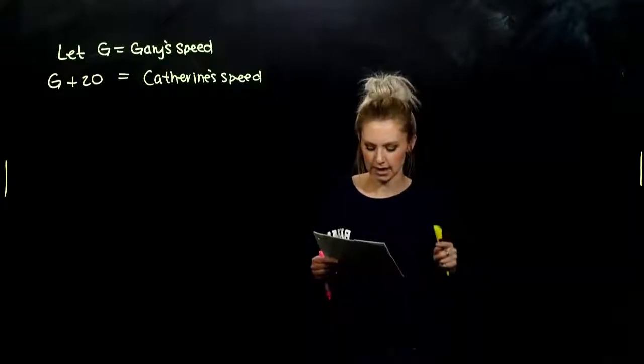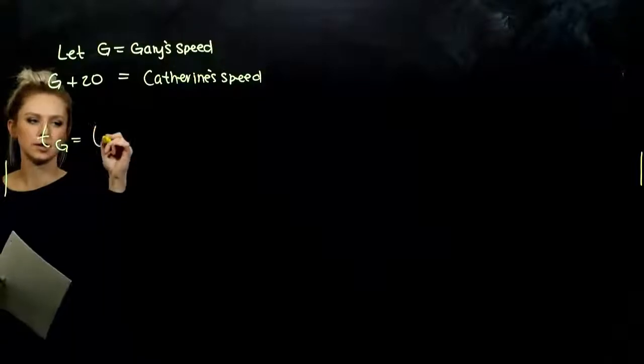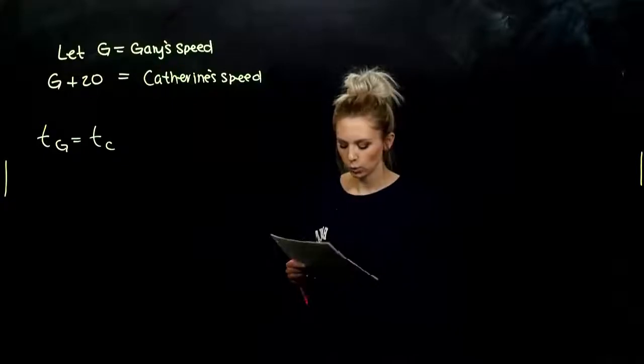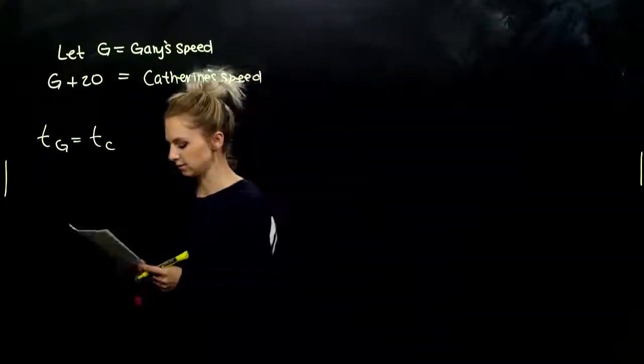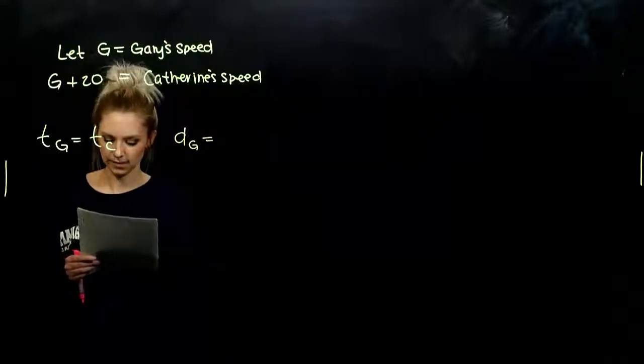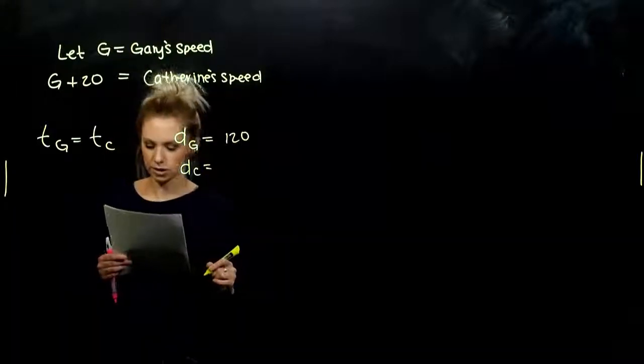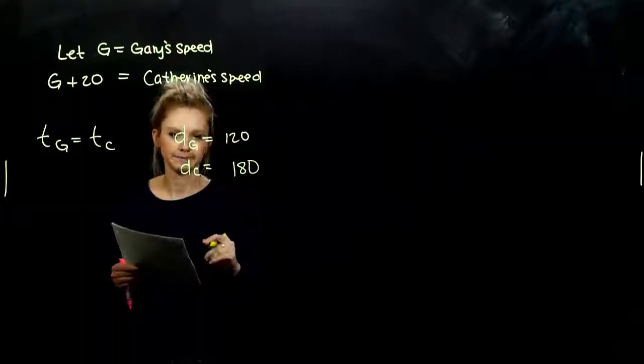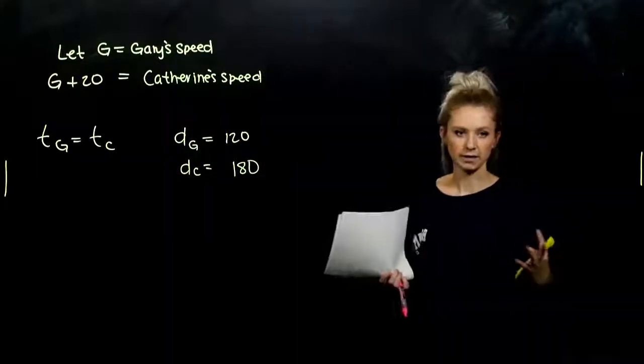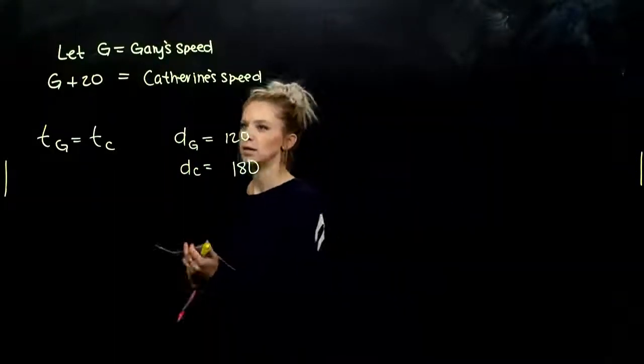What other piece do we know? In the same time. So I know that the time for Gary is the same as the time for Catherine. And what about their distances? So how far are they traveling? So Gary's distance, he went 120 miles. And Catherine's distance, how far did she go? 180. And it makes sense that she's going farther, because they're traveling the same amount of time, but she's going faster. She's going faster than Gary.